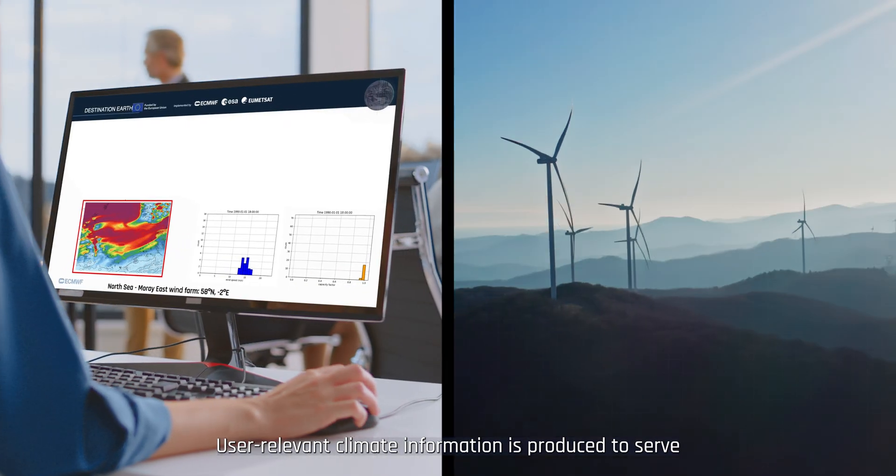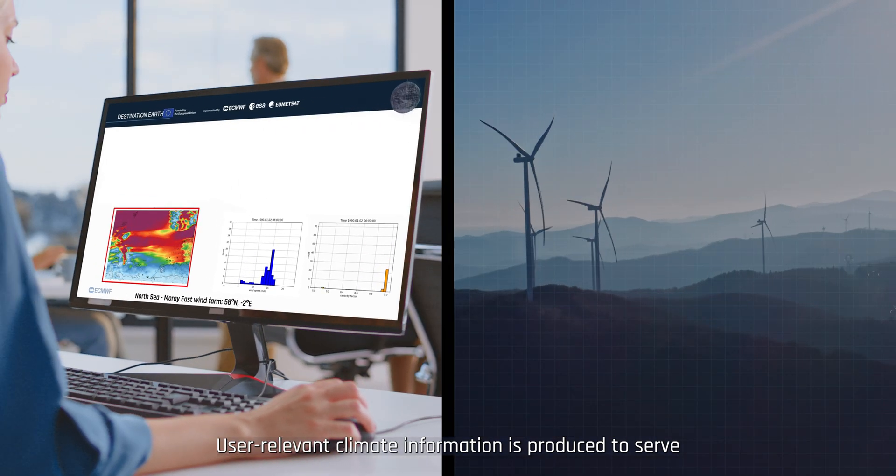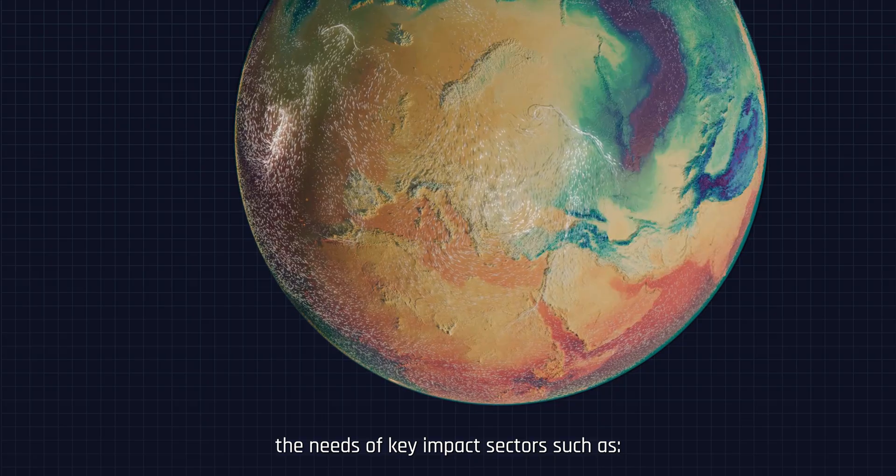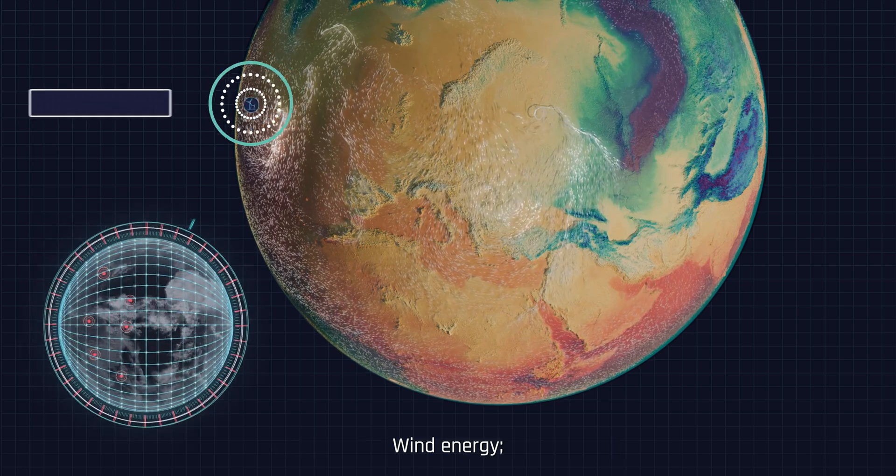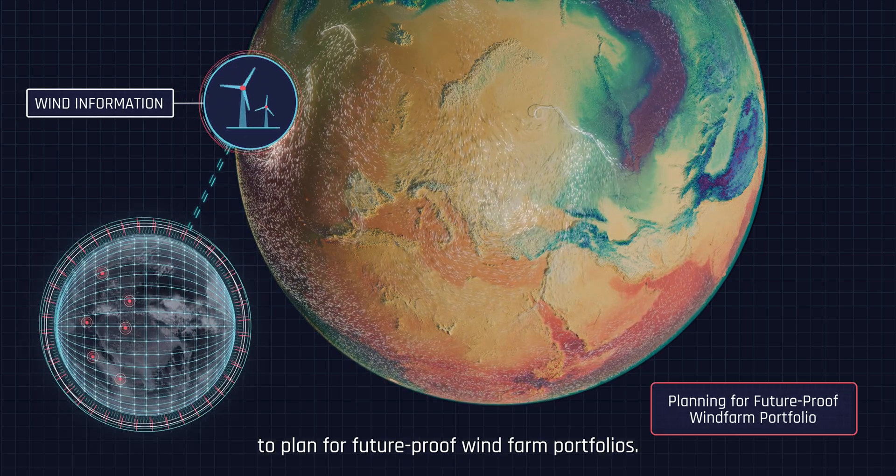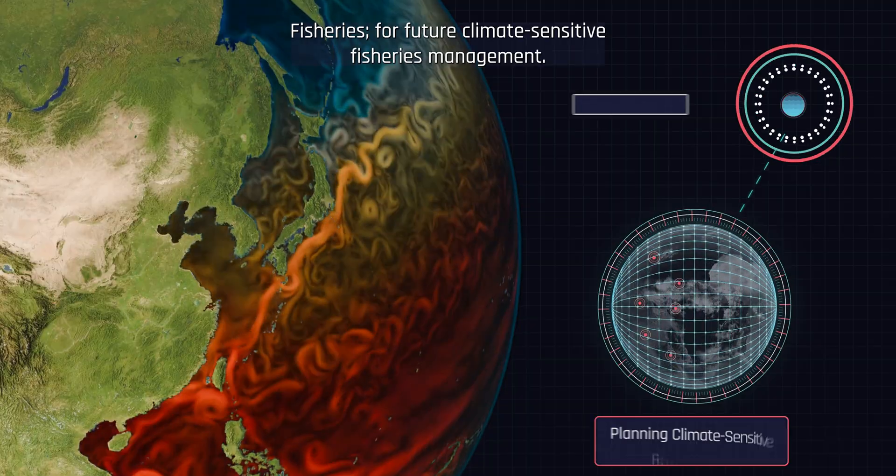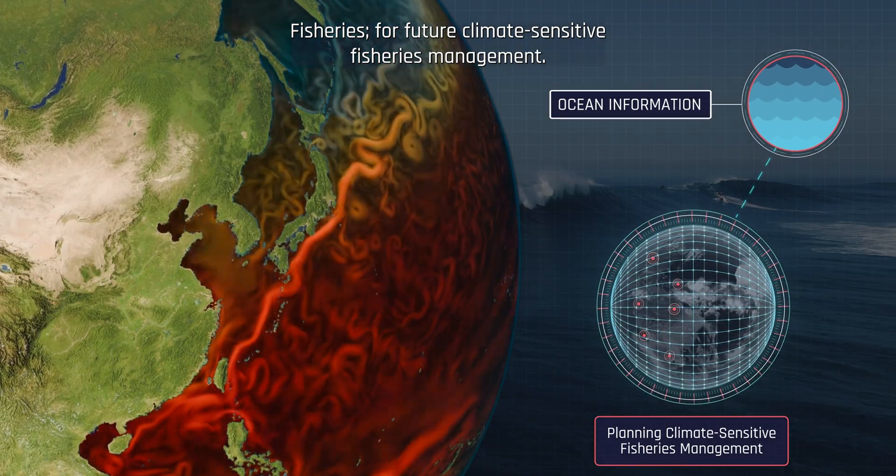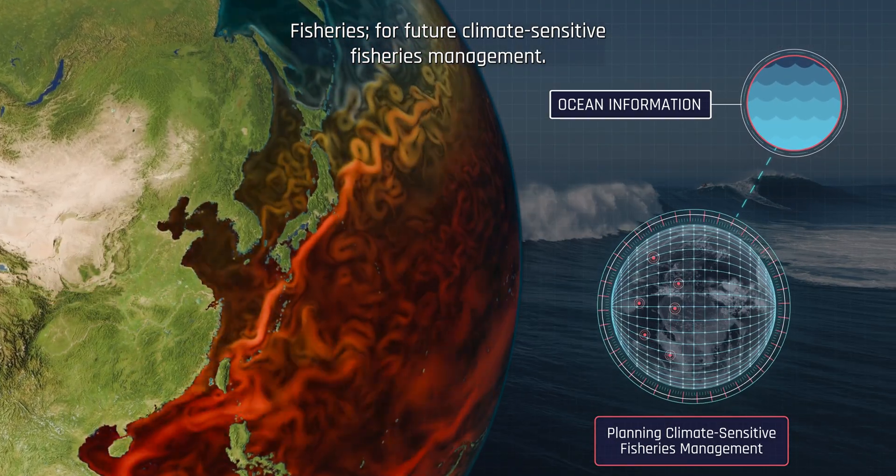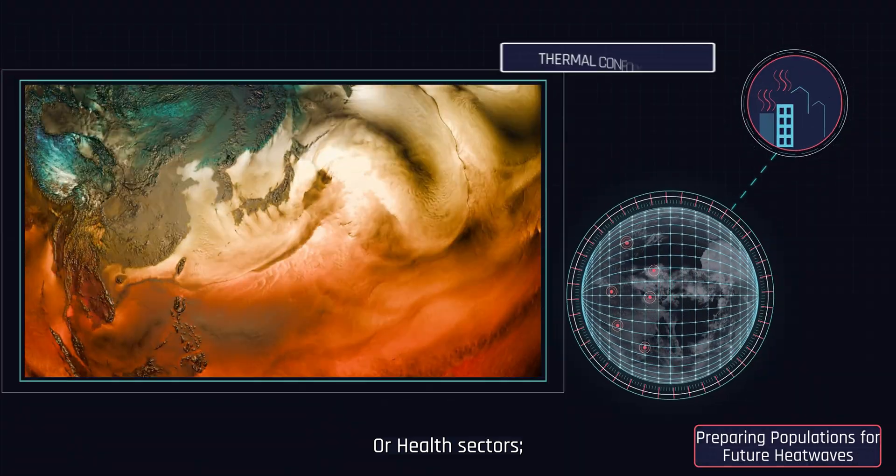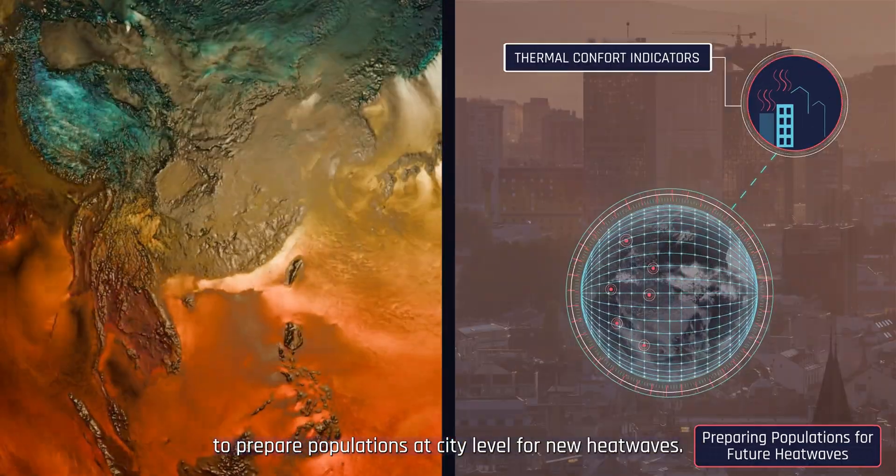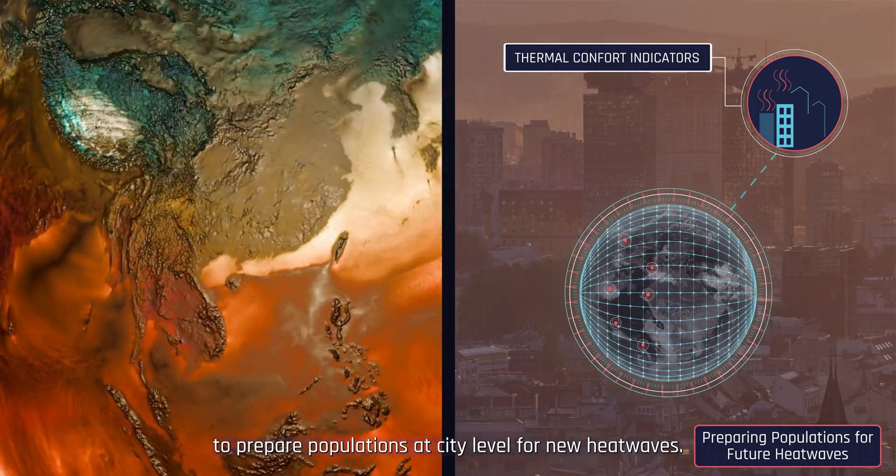User-relevant climate information is produced to serve the needs of key impact sectors such as wind energy to plan for future-proof wind farm portfolios, fisheries for future climate-sensitive fisheries management, or health sectors to prepare populations at city level for new heat waves.